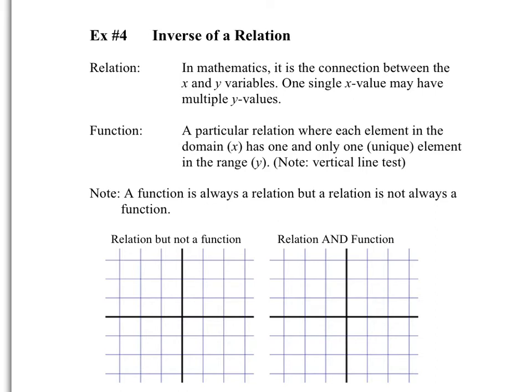The easiest representation of a function is a computer. You press one button on your keyboard, and one thing happens on your screen — there isn't a multitude of things that happen. So if you press S, an S shows up on your screen. That's what a function is: one value of x gives only one value of y.